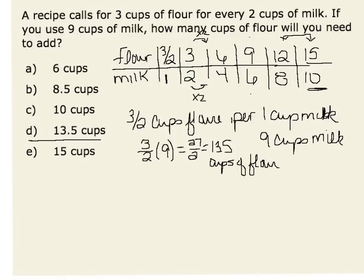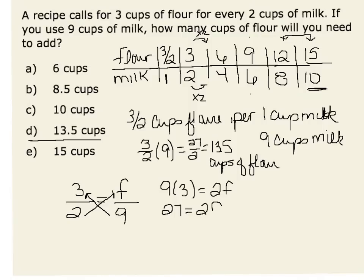A final way I could solve this is to set up a proportion. I know that I have three cups of flour to two cups of milk. I want that to be equivalent to f cups of flour when I have nine cups of milk. To solve this proportion, I could cross multiply, stating that nine times three is the same as two times f, or 27 is equal to two f. Dividing both sides by two, I will see the cups of flour is equal to 27 halves, or thirteen and a half cups of flour.